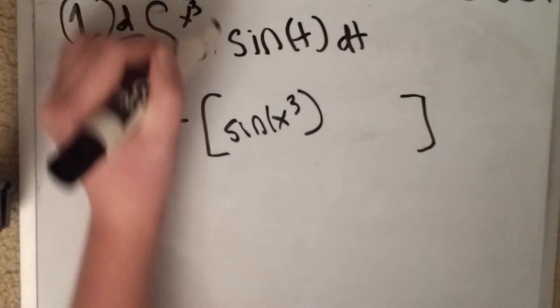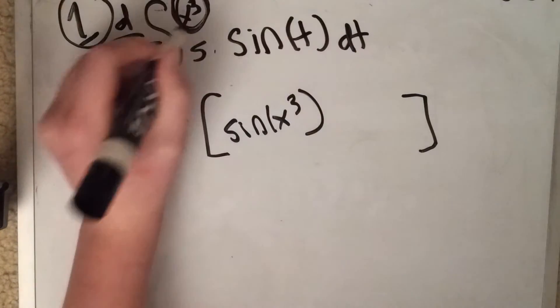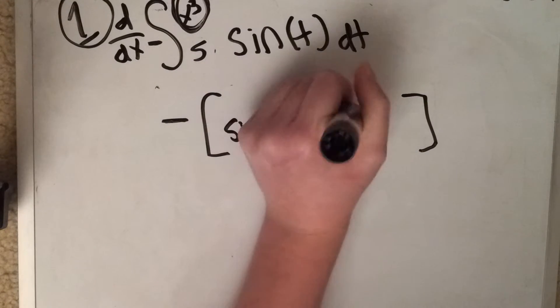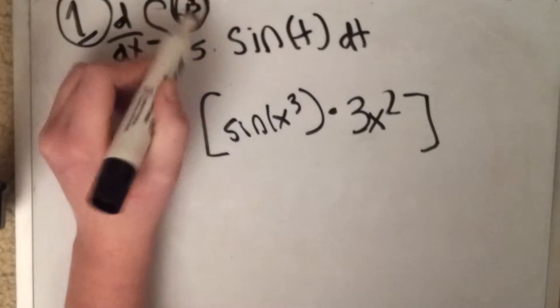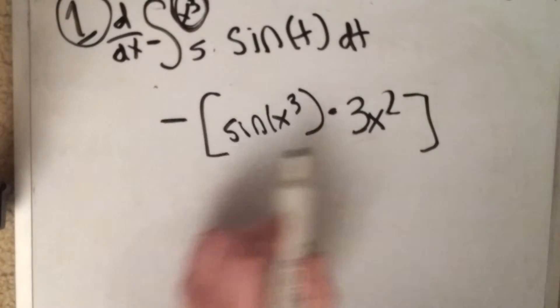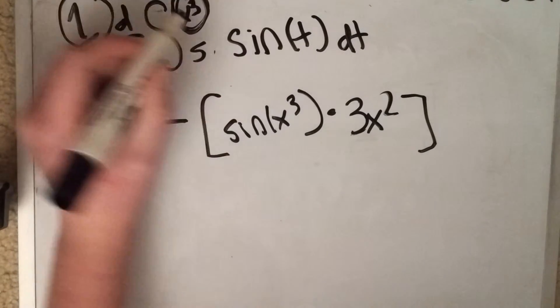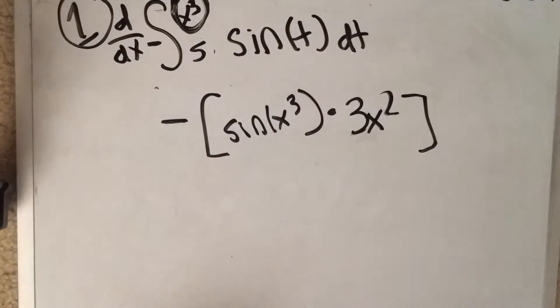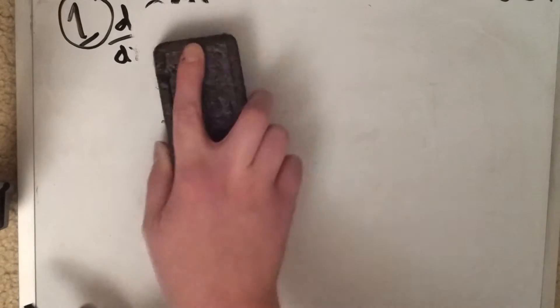And then don't forget the chain rule though. Whatever this is, you have to take the derivative of it and then multiply it to this. So in this case it would be 3x squared. If this is just x, don't worry about it because the derivative is 1, so it won't matter. But if it's not, don't forget the chain rule, and you have to multiply it by the derivative of the upper bound if it is an x. That's a type 1, that's the one you usually see most of.